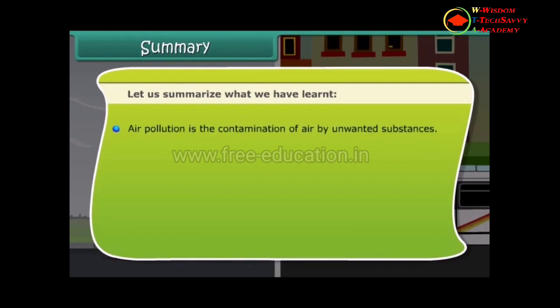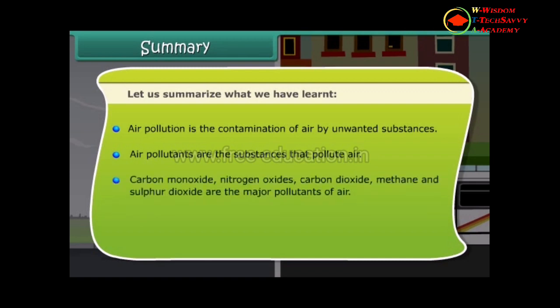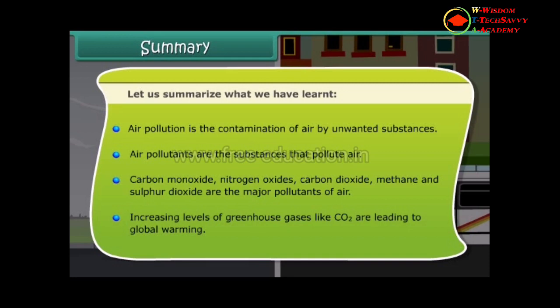Air pollution is the contamination of air by unwanted substances. Air pollutants are the substances that pollute air. Carbon monoxide, nitrogen oxides, carbon dioxide, methane, and sulfur dioxide are the major pollutants of air. Increasing levels of greenhouse gases like CO2 are leading to global warming.